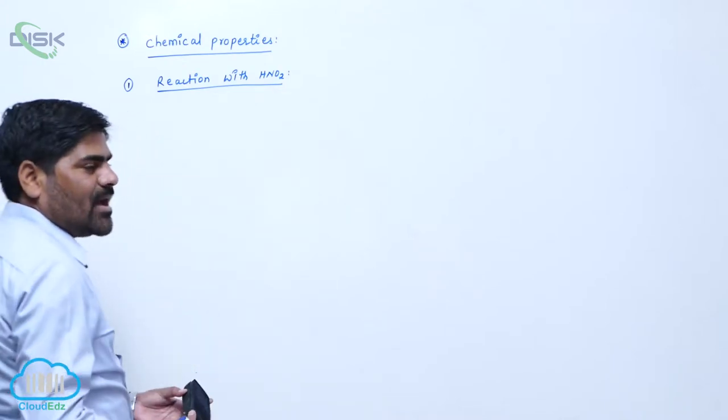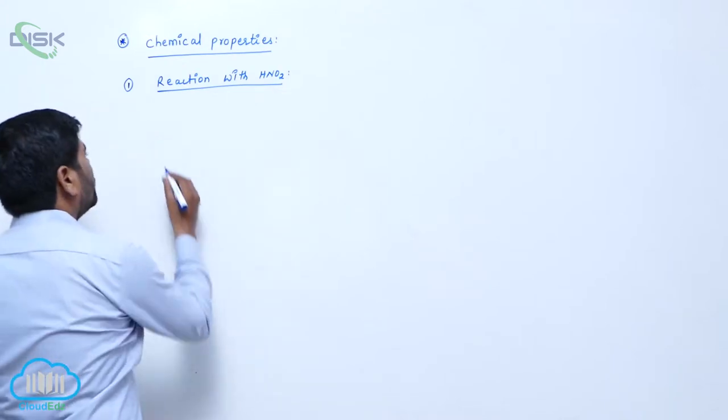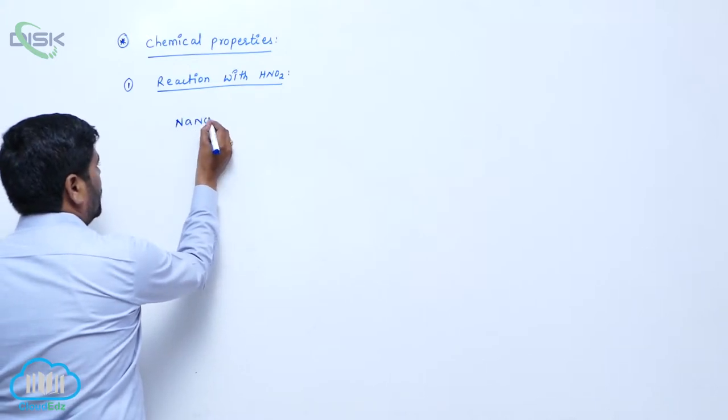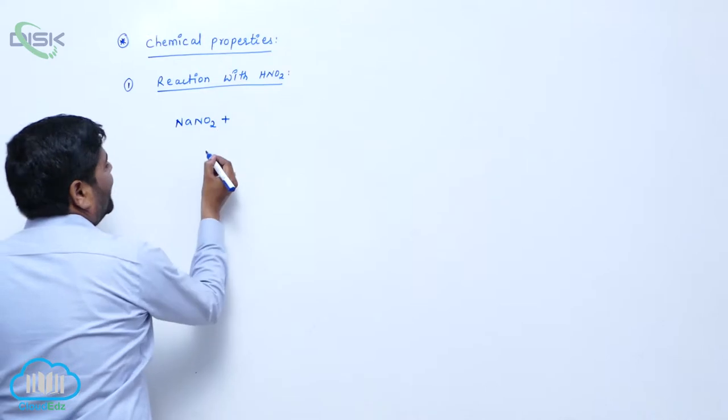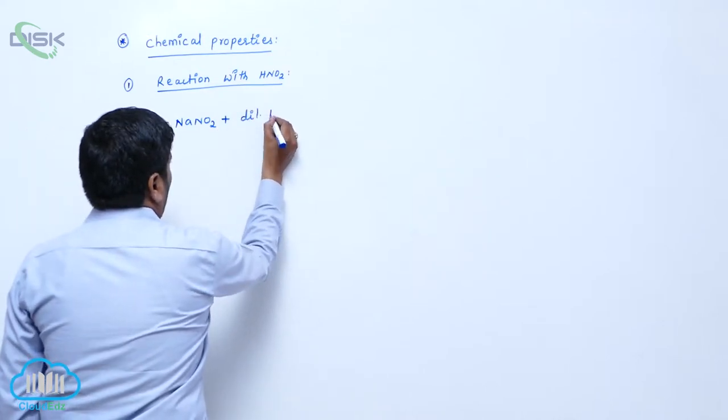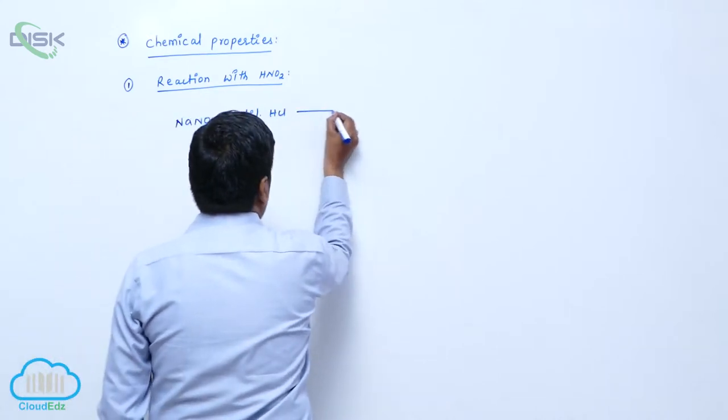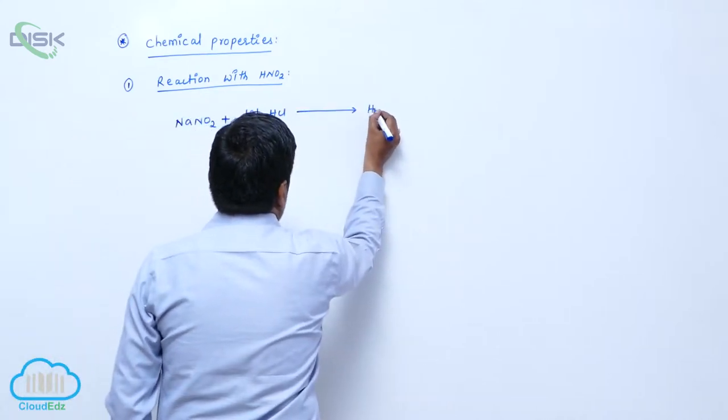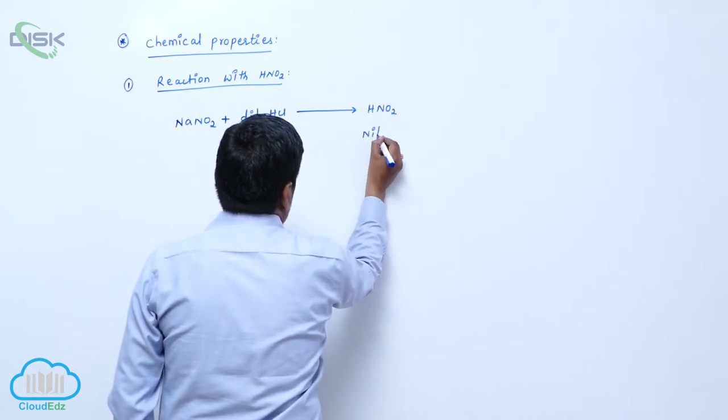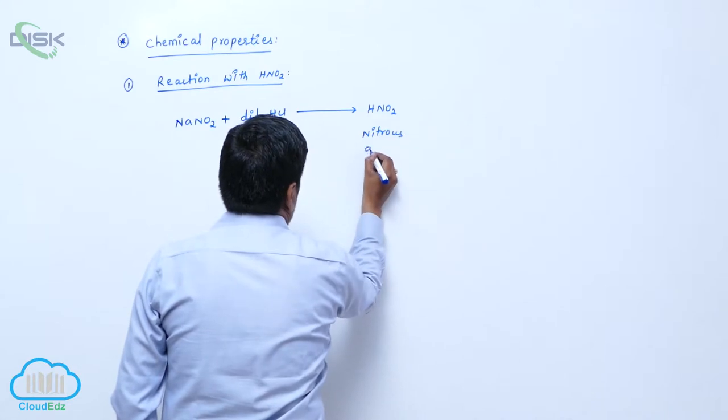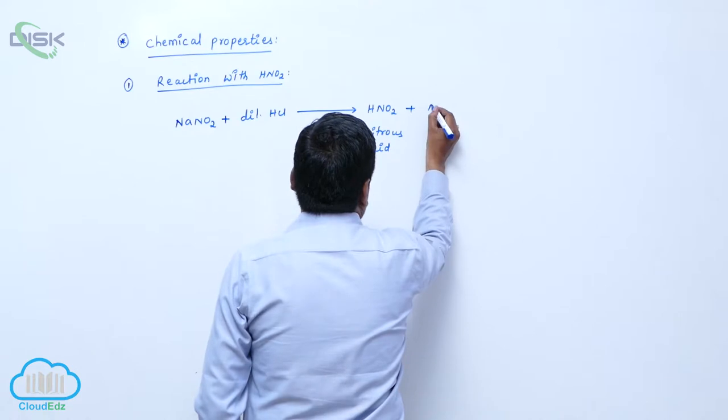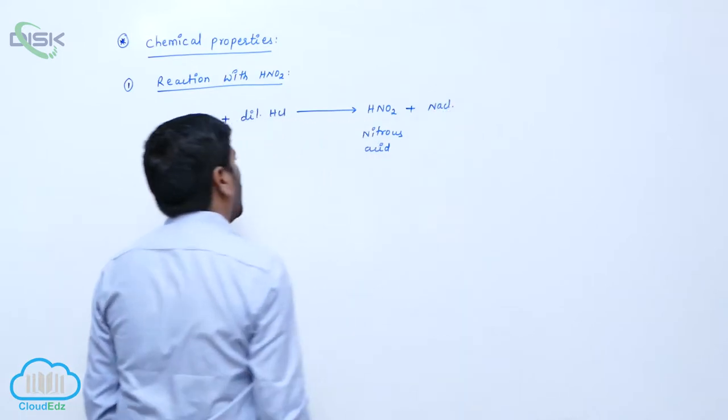Generally, Nitrous Acid is an unstable acid. It is obtained from Sodium Nitrite reacting with Dilute Hydrochloric Acid to form Nitrous Acid plus Sodium Chloride.